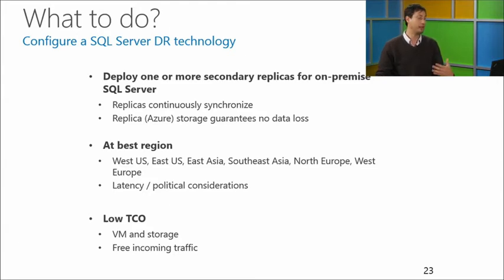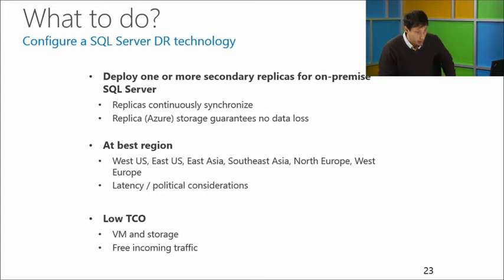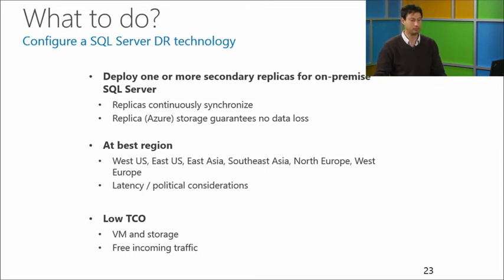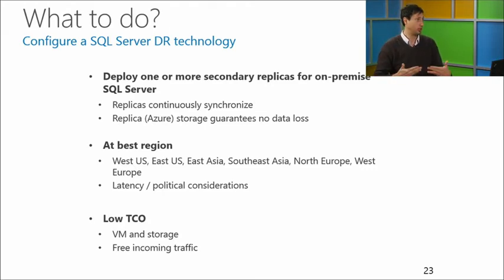You can put these replicas in the best region for you — West US, East US, Asia, North Europe, West Europe. How you decide depends on latency — you want to keep round-trip latency within 60-70 milliseconds between your primary data center and the cloud. Some countries also have political considerations about where data can be kept. The total cost of ownership is very low — you only pay for the virtual machine and the storage. All traffic you send into the virtual machine is free, so synchronizing transactions from on-premise to the cloud incurs no transfer cost.